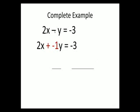Alright, now we'll show one example using all the steps one after the other. In our equation, we have 2x minus y equals negative 3. We're going to combine two things at once. We're going to change the subtraction to addition and put in the visible one so that you can see it.